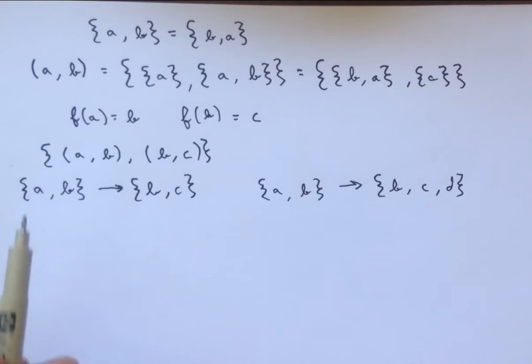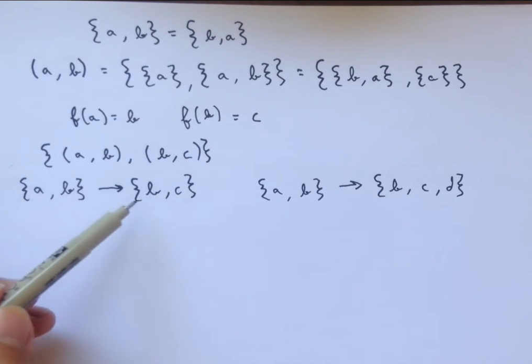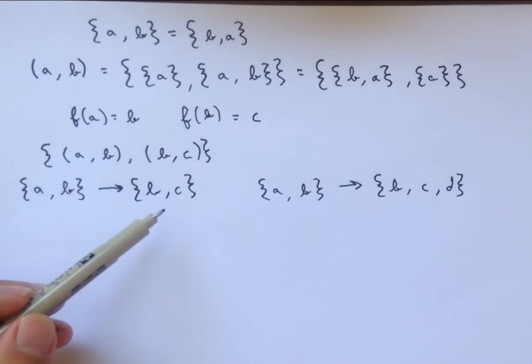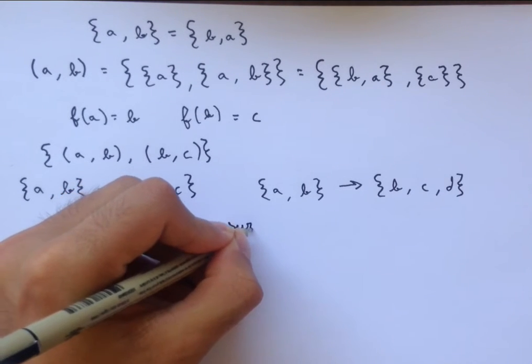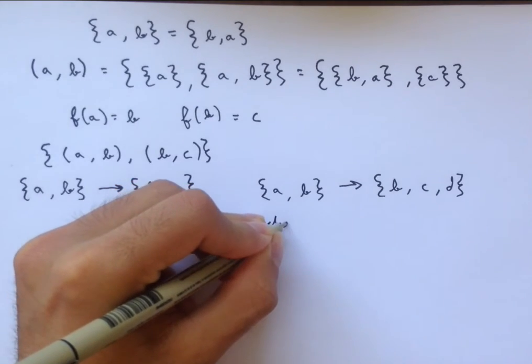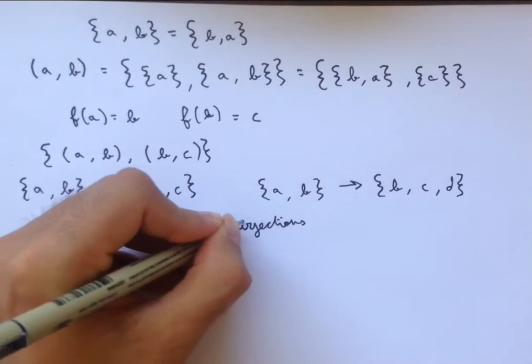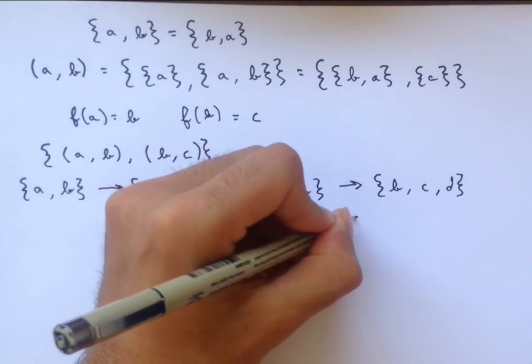But what if we only want to talk about the cases where every element in the set that we're mapping onto is mapped onto by some element of the set? Well, we have a word for these types of functions, and we call them surjections.